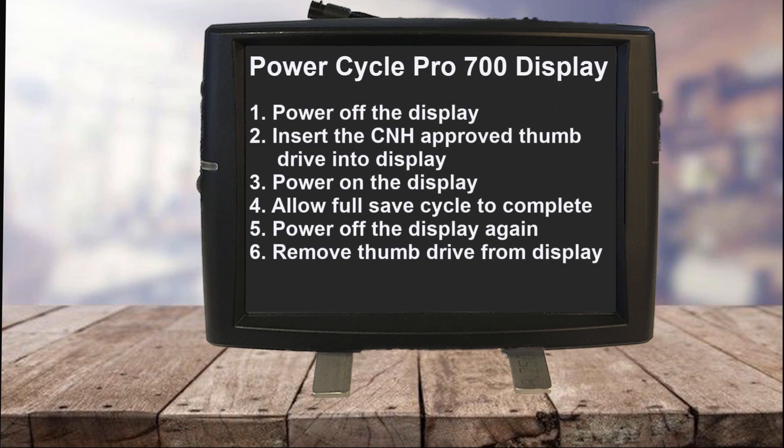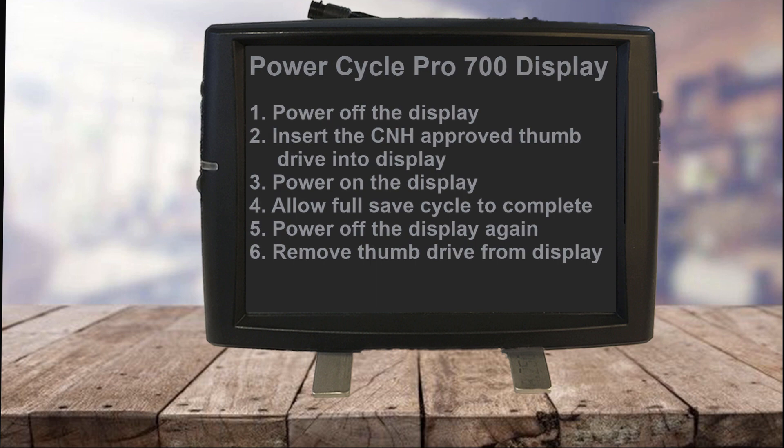In order to do so, power down the Pro 700 display, plug the thumb drive into the Pro 700, power on the Pro 700, allow the Pro 700 to fully power up and complete the save cycle to your thumb drive. Then power down the Pro 700, then remove the thumb drive from the Pro 700 display.